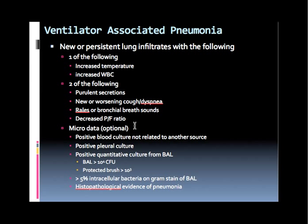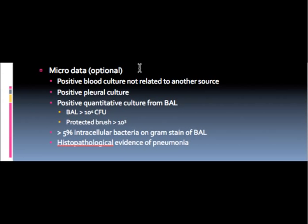What I think is most interesting about ventilator-associated pneumonia is that the microbiologic data is optional. If you choose to use it, you need a positive blood culture not related to another source, or a positive pleural culture — though very few of us will go after pleural fluid, especially because most patients don't have significant pleural fluid. Most pertinent to this presentation is that in the definition itself of VAP, it does not rely on tracheal cultures, but rather quantitative cultures from the BAL. This could be obtained bronchoscopically or with blind BAL.